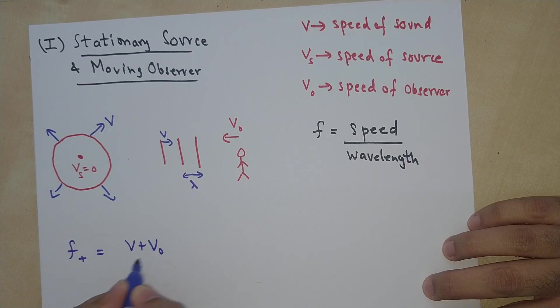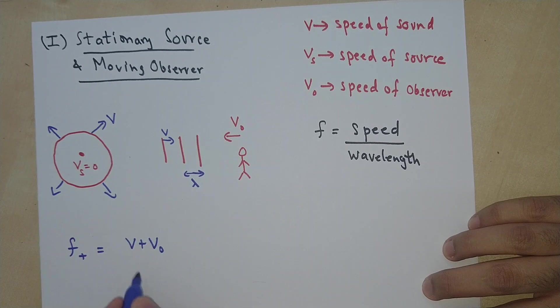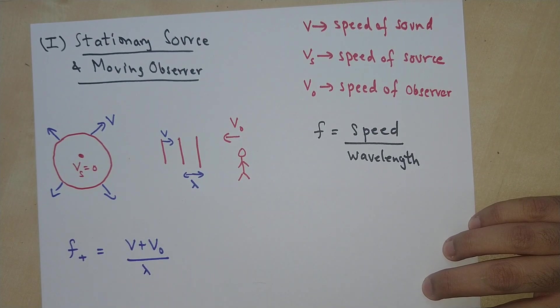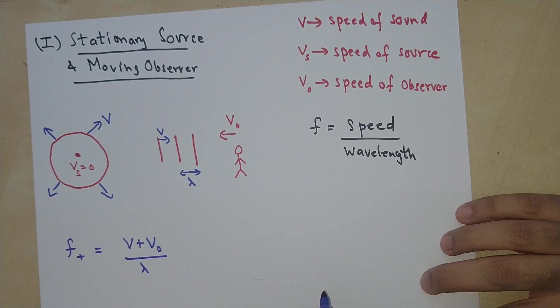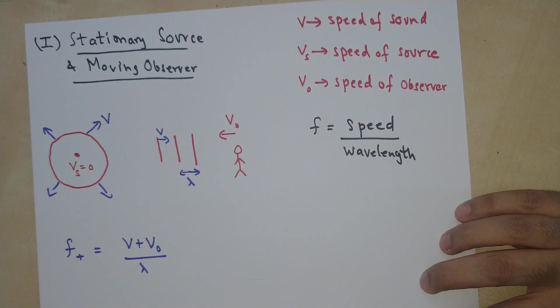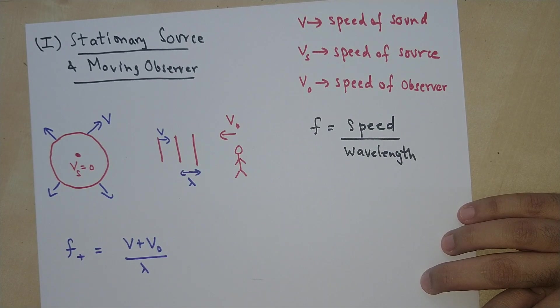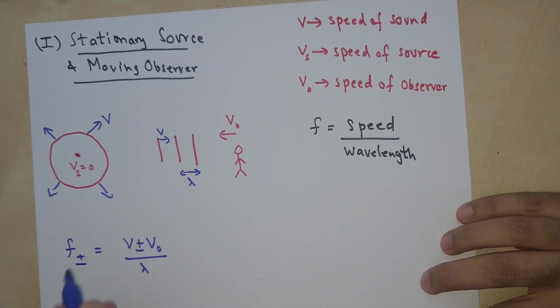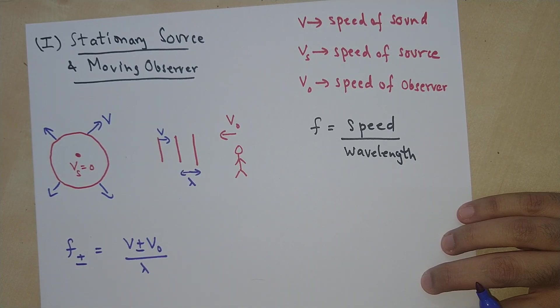So V plus V naught, again, these two velocities are adding up divided by lambda. Now, if the observer is moving away from the source, then you get a negative sign here because the relative velocity will decrease then.